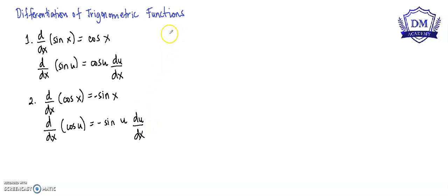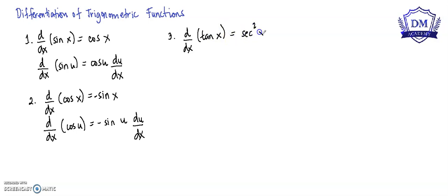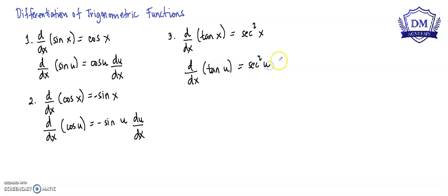The derivative of tangent x with respect to x is equal to secant squared x. Or using the chain rule, the d over dx of tangent u is equal to secant squared u times du over dx.